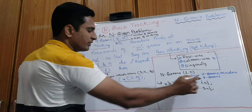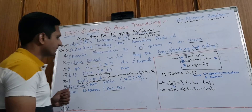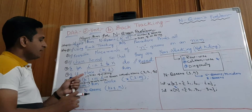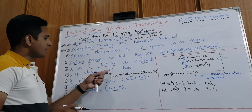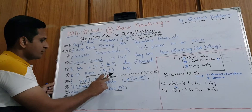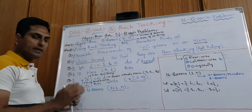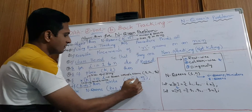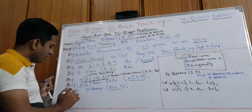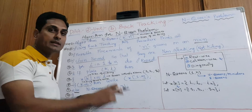I1, I2, up to IK — you can write anything. If Place(K, I), then place one by one: X of K is equal to I. This is placed. If K equals N, when it has reached N, then X of one to N — all queens are fixed. Else, N-Queens is called with K plus one — the next queen is placed.